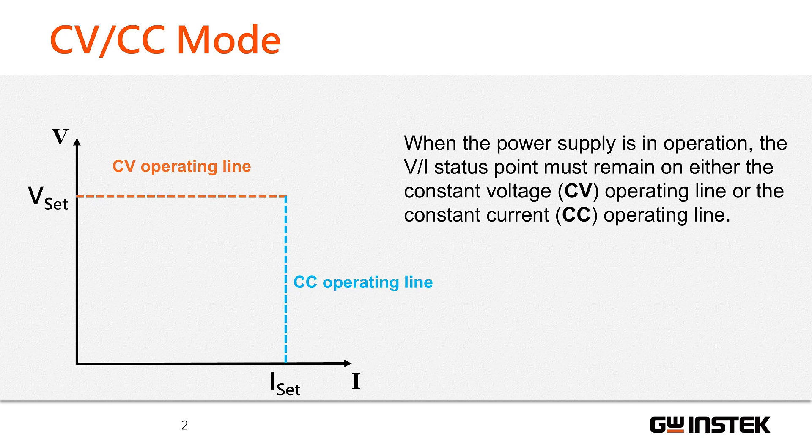In CV mode, the power supply maintains a stable voltage at the set value by adjusting the current, while the current is limited to its designated value and the V-I combination will align with the orange line.